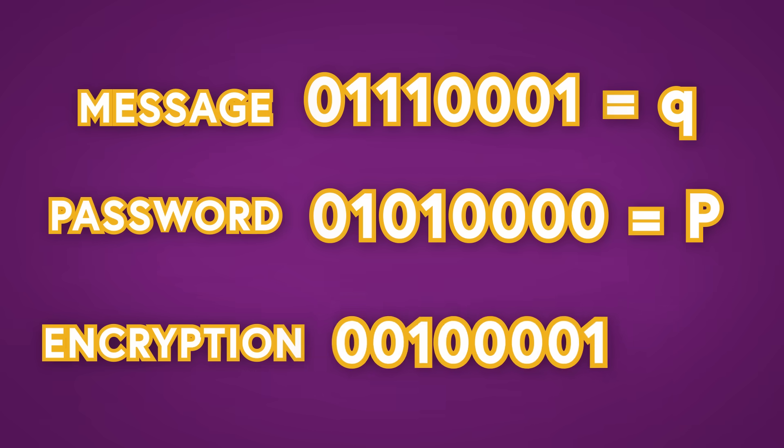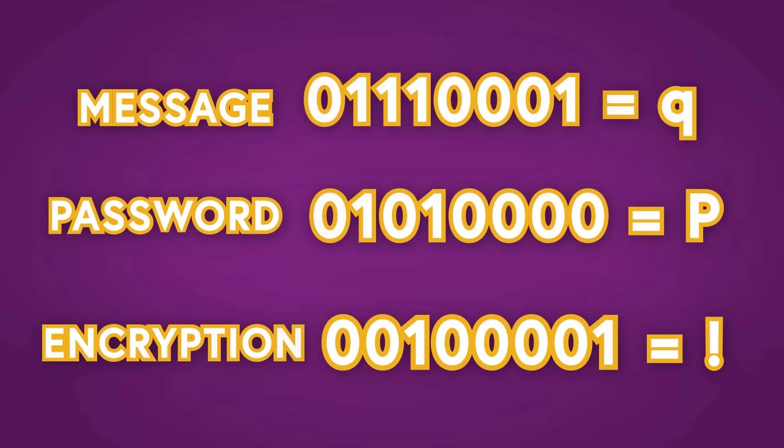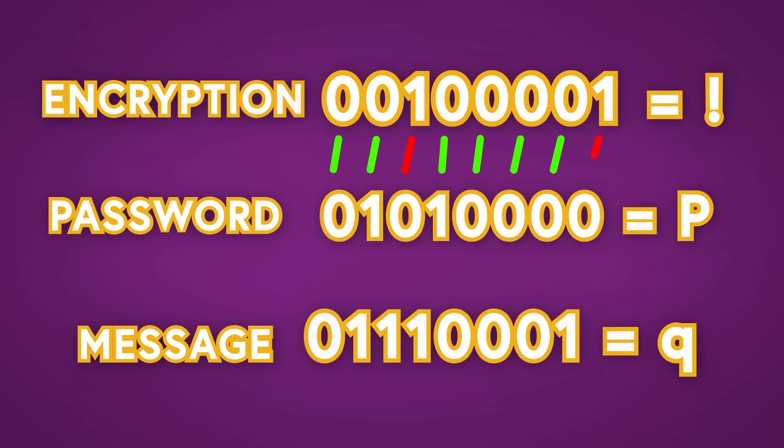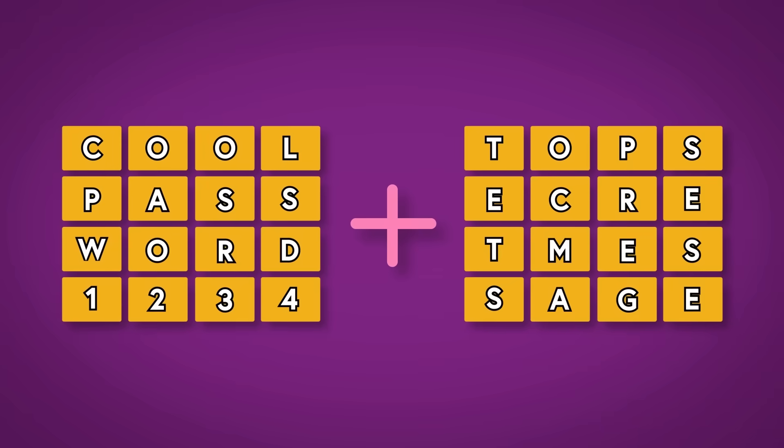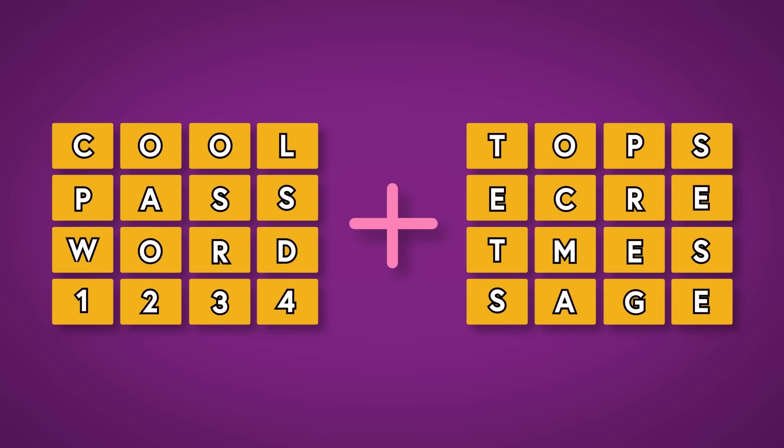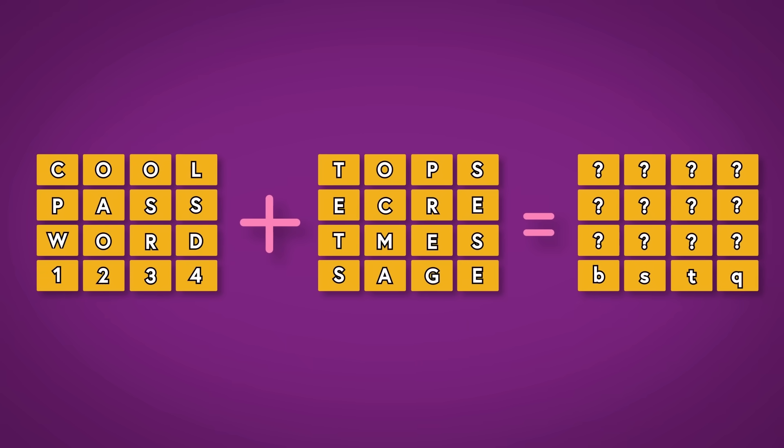The cool thing about this is that if you take the resulting encrypted text—in this case it happens to be an exclamation mark—and do the exact same thing with the exact same password, you end up with the text that you started with. So, we're going to go ahead and do this with every character in our block and we'll end up with an entirely new block of encrypted text.